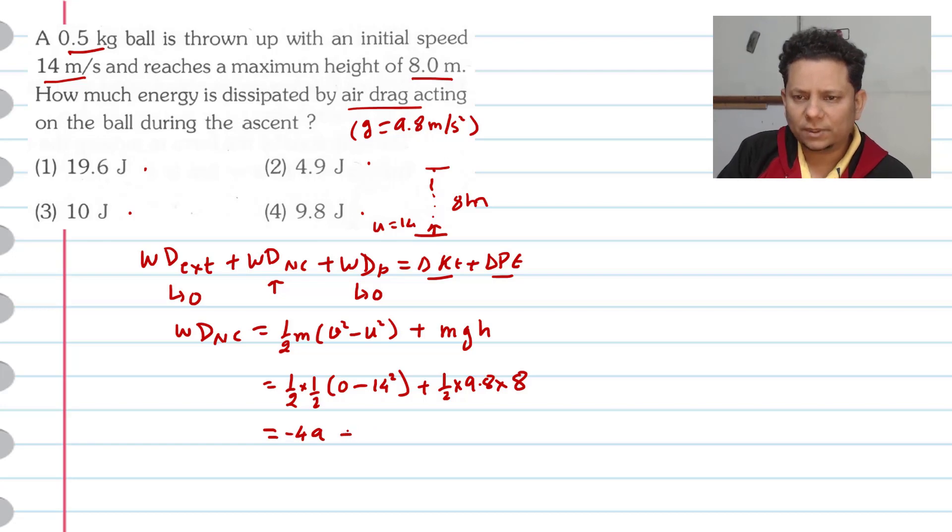With minus sign, plus - this becomes 9.8 multiplied by, if we cancel 2 from 8 we get 4. So the value will be equal to - let's write it here - 9.8 multiplied by 4. Now when we solve this, the value becomes minus 49 plus 39.2.